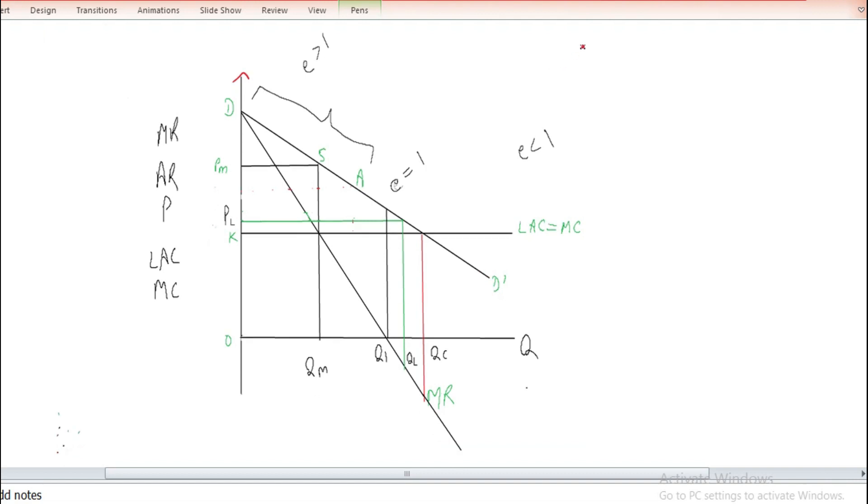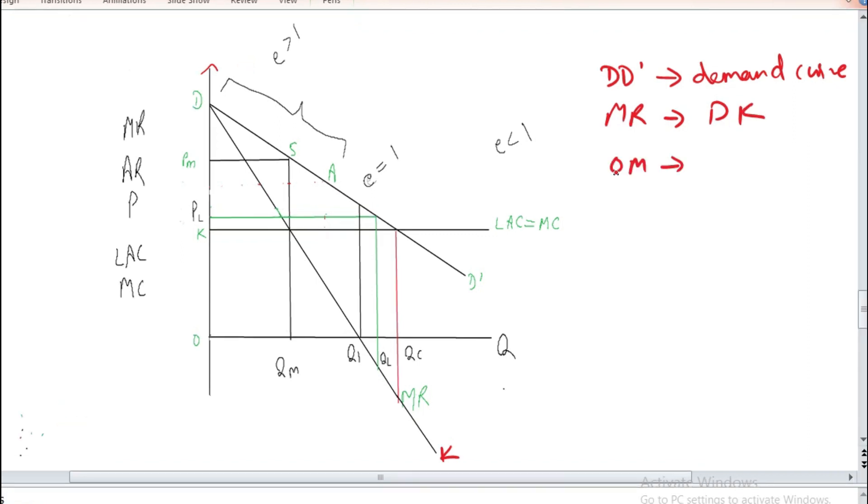And you have MR curve which is below the demand curve. MR curve is DK. At OPM price, OQM quantity is produced, this is the monopoly price.